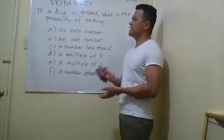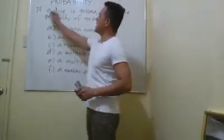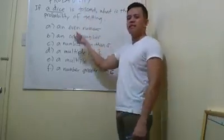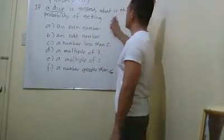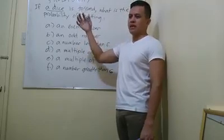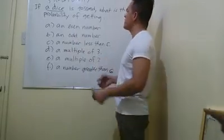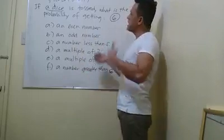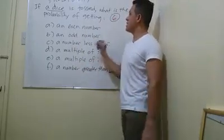Now, just an example — if a dice is tossed, what is the probability of getting... A dice has how many faces? There are six faces, with a number on each face: one, two, and up to six. So the total number of events for a given dice, if you're going to toss a dice, is six.